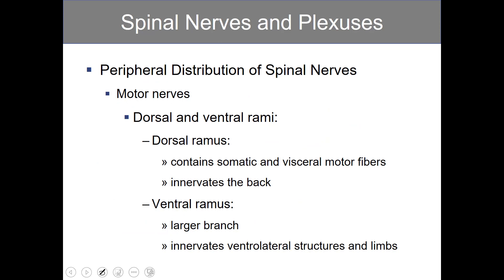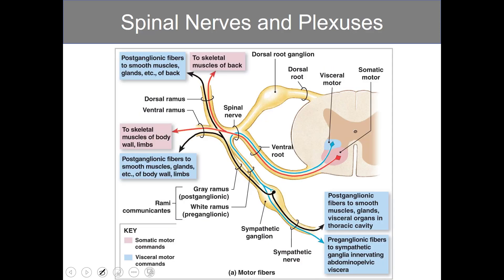Looking at the peripheral distribution of spinal nerves, almost immediately after the spinal nerve is formed, it branches into rami. The dorsal ramus heads to the skeletal muscles of the back and to the postganglionic fibers of the smooth muscles and glands of the back. The ventral ramus covers the body walls and the limbs.